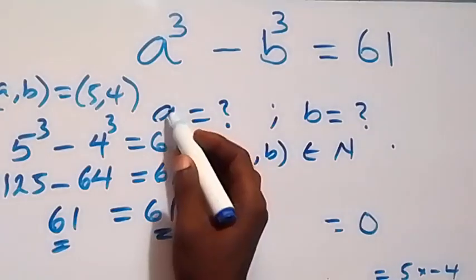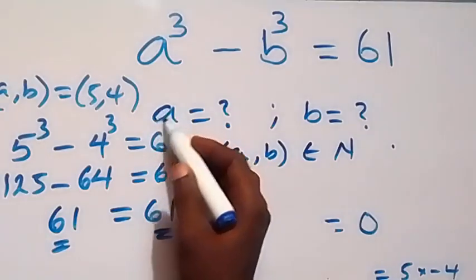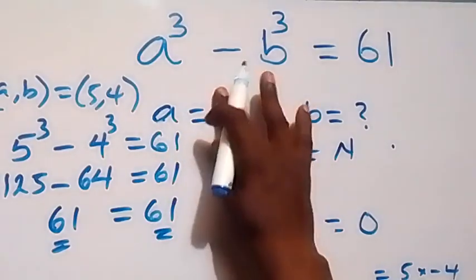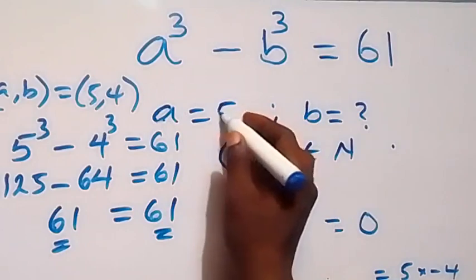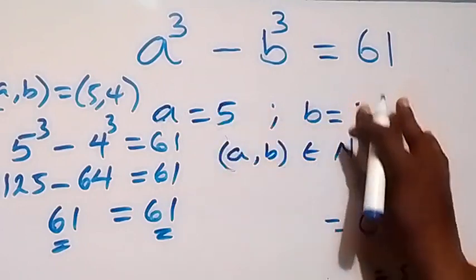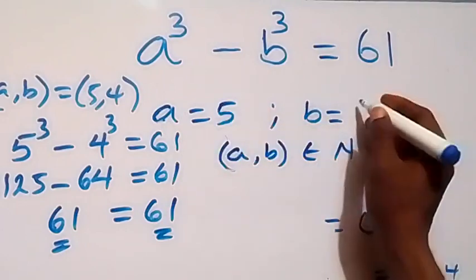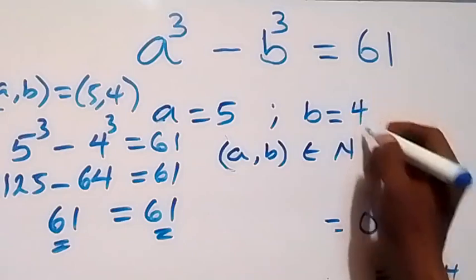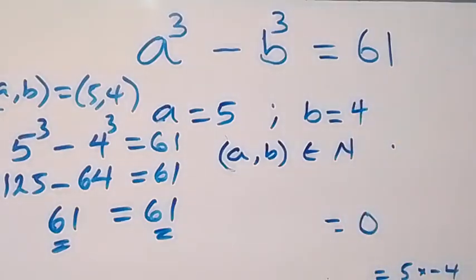The left hand side equals the right hand side, and hence we conclude that the solution a equals 5 and b equals 4 satisfies the given problem. Thank you for watching, subscribe to my channel and turn on the notification bell. See you next time, bye for now.